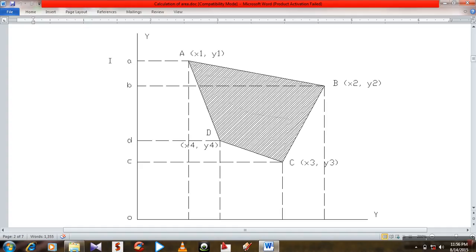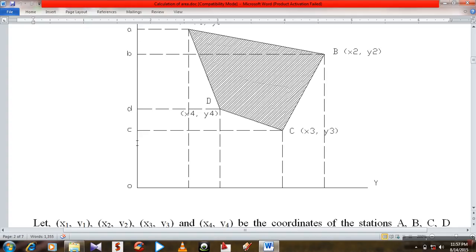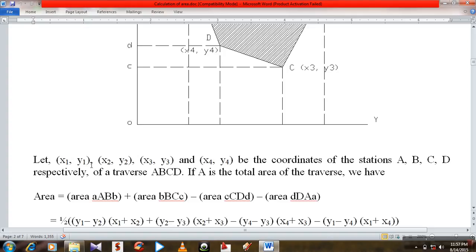The projection from a small a, b small b, c small c, and d small d. Let x1 y1, x2 y2, and same as x4 y4 be the coordinates of the station a, b, c, d respectively of traverse a, b, c.